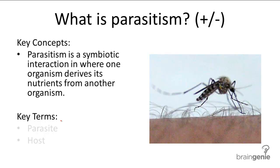Parasitism is the third symbiotic relationship, involving a parasite and a host. The parasite is the organism that feeds off the nutrients of another organism, and the host is the organism that the parasite is feeding off of.